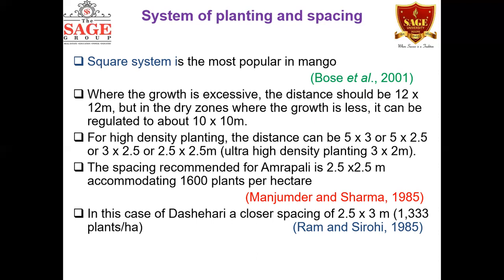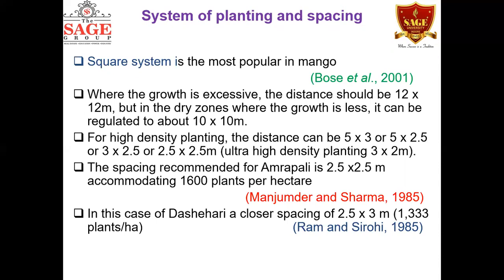These two — 10x10 and 12x12 meters — are conventional or traditional methods of planting for mango. Another method using different spacing is called high density planting. There are two methods: high density planting and ultra high density planting. High density planting uses distances of 5 into 5 meters, or rectangular spacings like 5 into 3, 5 into 2.5, or 3 into 2.5 meters.